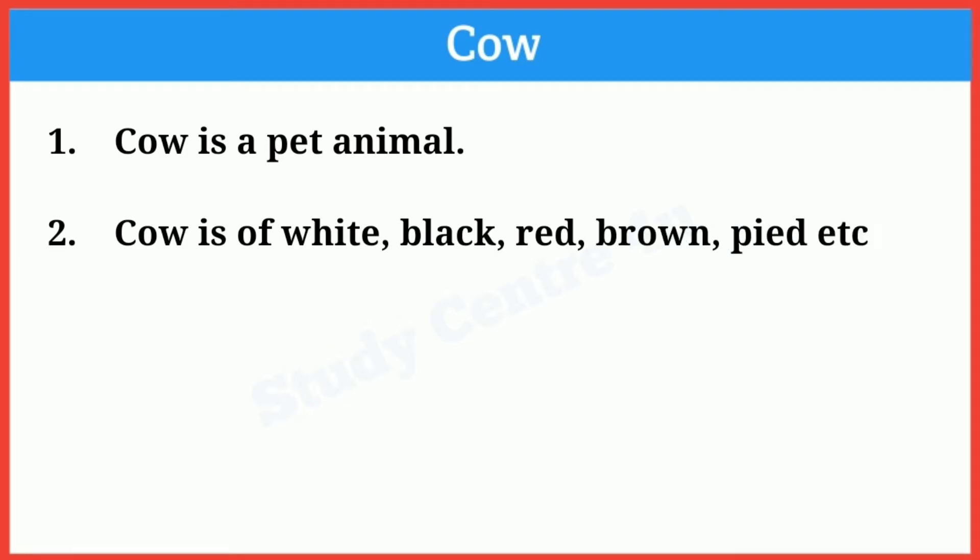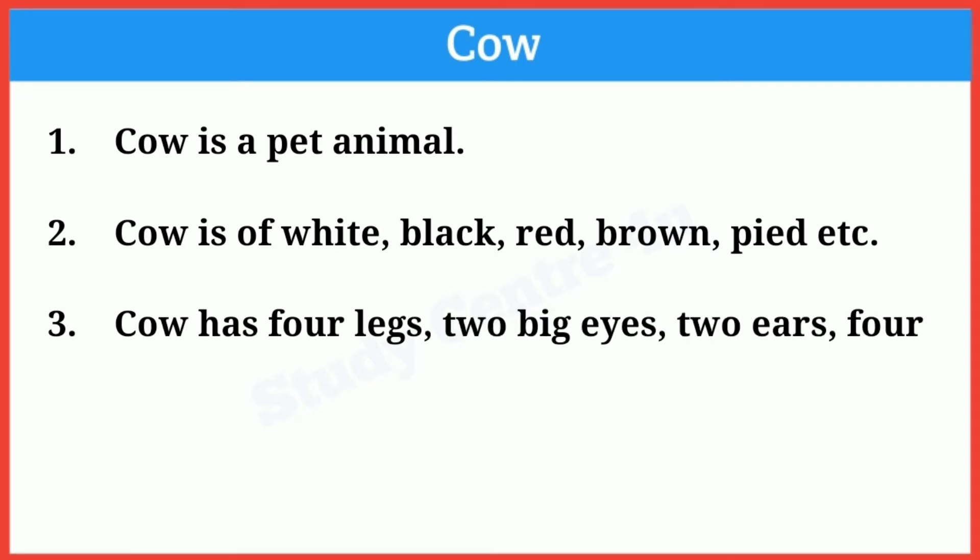Line three: Cow has four legs, two big eyes, two ears, four udders, and a long tail.